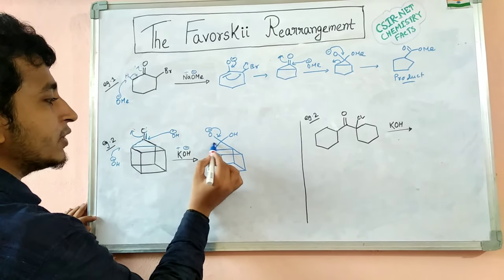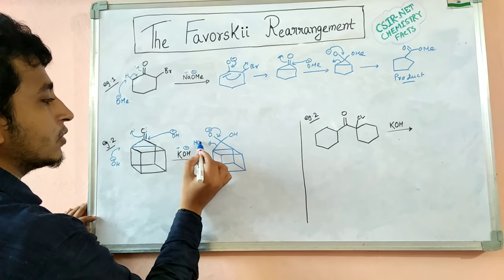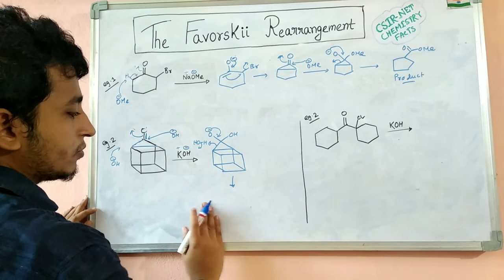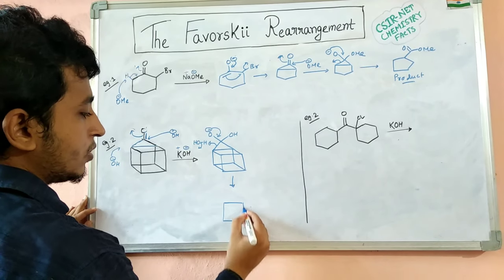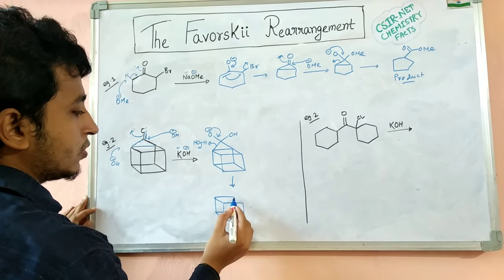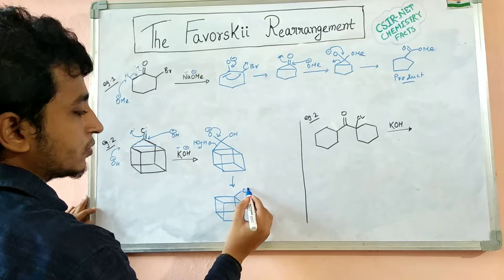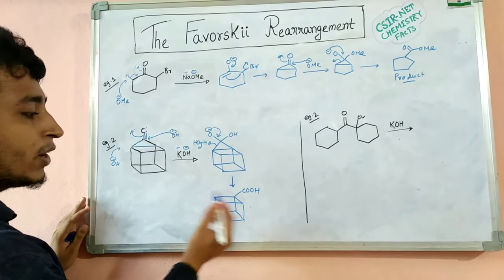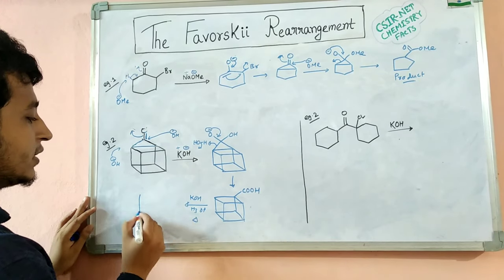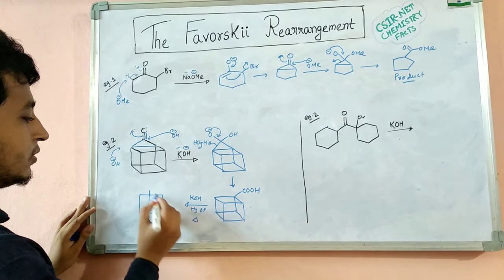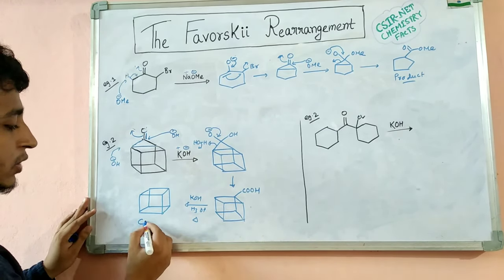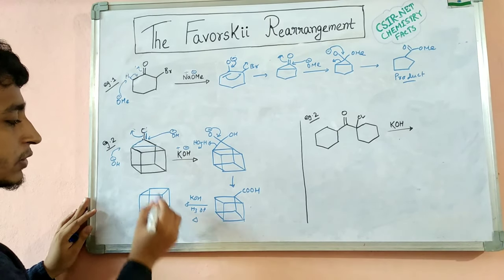The carbanion comes back, this bond opens, and it takes a proton from the solution — forming this product. If we want to carry out further decarboxylation in the presence of KOH, H₃O⁺, and heat, then it will give the corresponding carboxylic acid or ring-contracted structure. This is the actual process for the formation of the ring-contracted product.